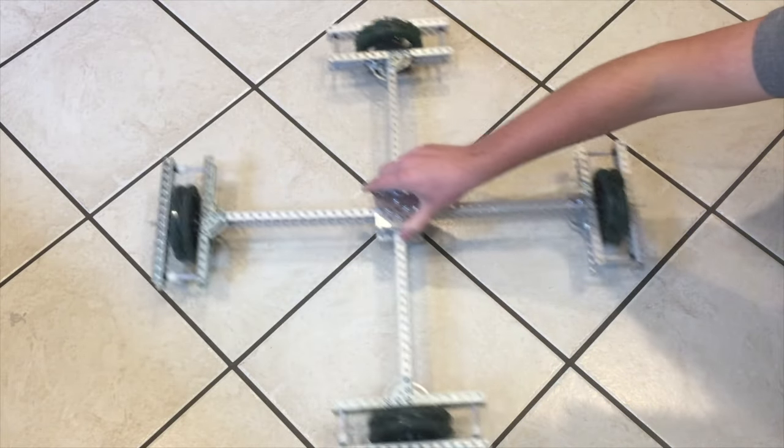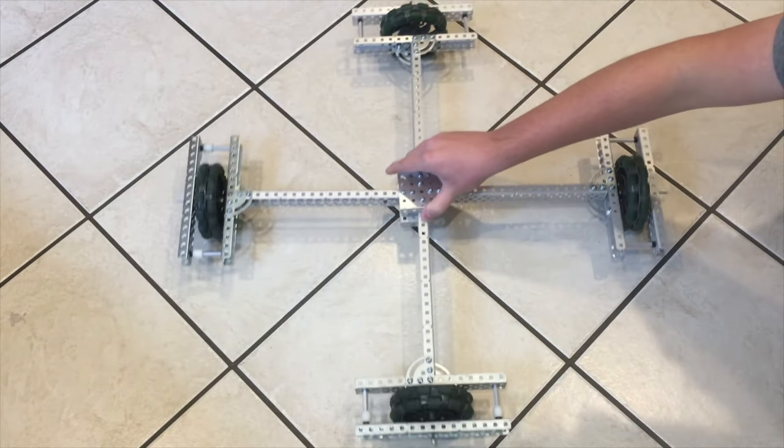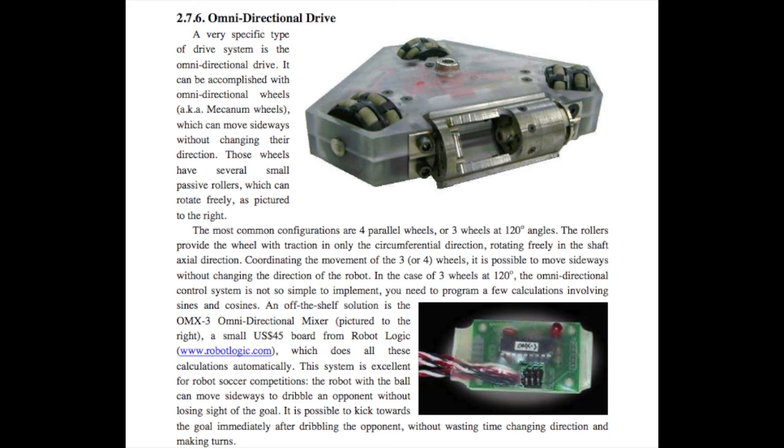There's also a three-wheeled holonomic drive, which is outlined in the excellent book RioBotz Combat Robot Tutorial, where it outlines three wheels set at 120 degrees from each other. However, this is difficult to make in Vex, seeing as there aren't gussets with that angle, and I wasn't sure how useful this knowledge would be in the Vex competition world.